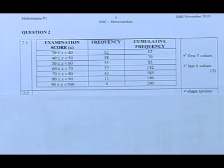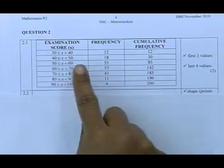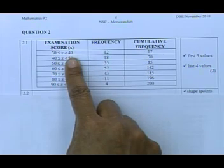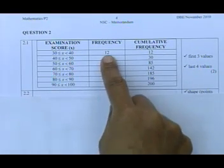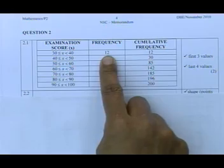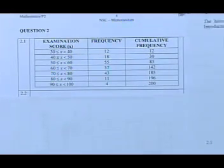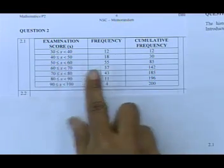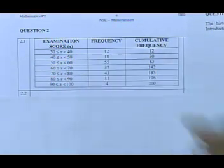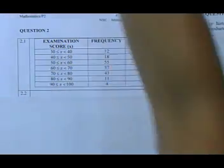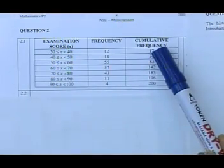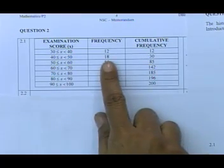Right. The learners that scored between 30 and 40 was 12. So their frequency there is 12. So the cumulative frequency is 12 as well. Then, between 40 and 50, I had 18 learners. And to get the cumulative frequency there, you need to add the 12 plus the 18, which gives you 30.